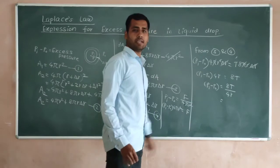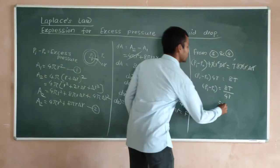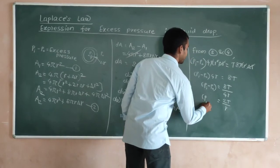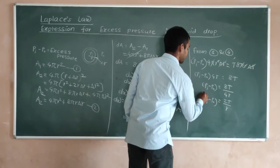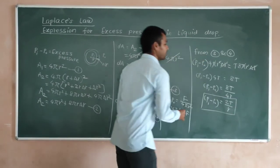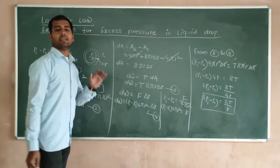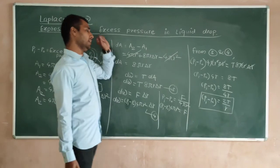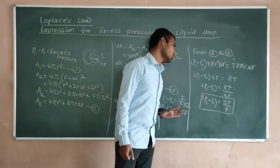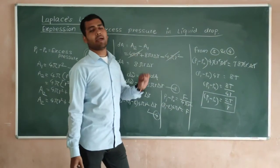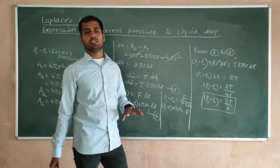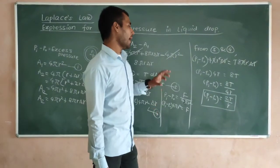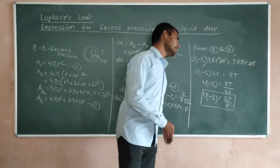So 8 divided by 4 gives 2, and therefore Pi − Po = 2T/r. This is the equation we get related to the excess pressure, where Pi − Po is the excess pressure, capital T is the surface tension, and small r is the radius.